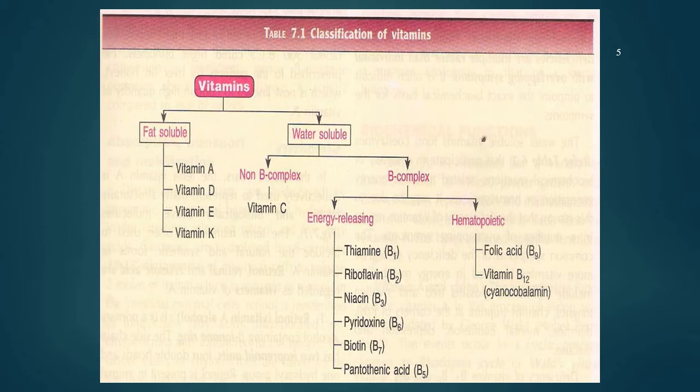For the non-B complex, it is also known as vitamin C. Vitamin B, or vitamin B complex, can be subdivided into two different types. The first is the energy-releasing B group, which includes thiamine, riboflavin, niacin, pyridoxine, biotin, and pantothenic acid. The second subgroup is the hematopoietic group, which includes folic acid and vitamin B12.